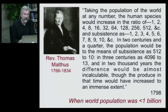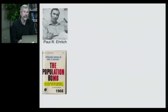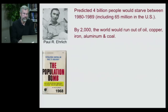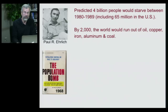Malthus recognized this as an incredibly dangerous potential back in 1798 when the whole world population was still less than a billion. Moving forward 170 years to 1968, a famous American ecologist Paul Ehrlich wrote a book called The Population Bomb, in which he took Malthus's logic, applied it to what he knew about manufacturing and agriculture, and came up with some pretty dire predictions. He predicted that 4 billion people would starve between 1980 and 1989, including 65 million people in the U.S.